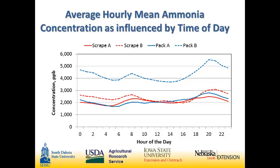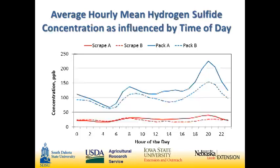Looking at overall averages across the facilities, ammonia concentrations were fairly similar across these barns — one was a little bit higher, but we're only talking a difference of two parts per million, which from an ammonia standpoint really isn't that large. With hydrogen sulfide, we saw peaks happening at the same time of day — 7 to 9 in the morning and 8 to 9 in the evening. Some different levels in the scrape systems and pack systems, which we also saw in the temperature data. Even though scrape system levels were very low, we still saw those peaks. With the pack system, the evening peak gets a little bit higher, which we attribute to temperature increase over the course of the day.